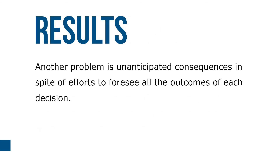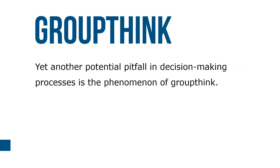Another problem is unanticipated consequences — in spite of efforts to foresee all of the outcomes of each decision. Yet another potential pitfall in the decision-making process is the phenomenon of groupthink. Groupthink is defined by a social psychologist as a mode of thinking that people engage in when they are deeply involved in a cohesive in-group, when members' strivings for unanimity override their motivation to reasonably appraise alternative courses of action.